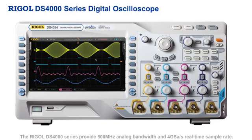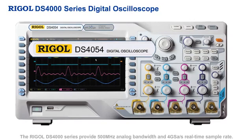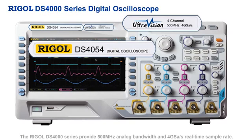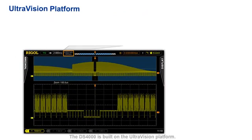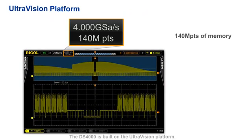The Rigol DS4000 series provides 500 MHz analog bandwidth and 4 Gbps real-time sample rate. The DS4000 is built on the UltraVision platform.